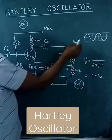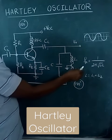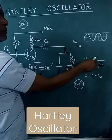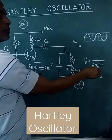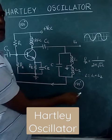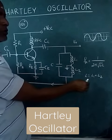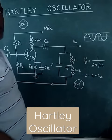The output waveform produced by the Hartley oscillator is a sinusoidal waveform, whose frequency is given by 1 divided by 2 pi root LC, where L is equal to L1 plus L2.